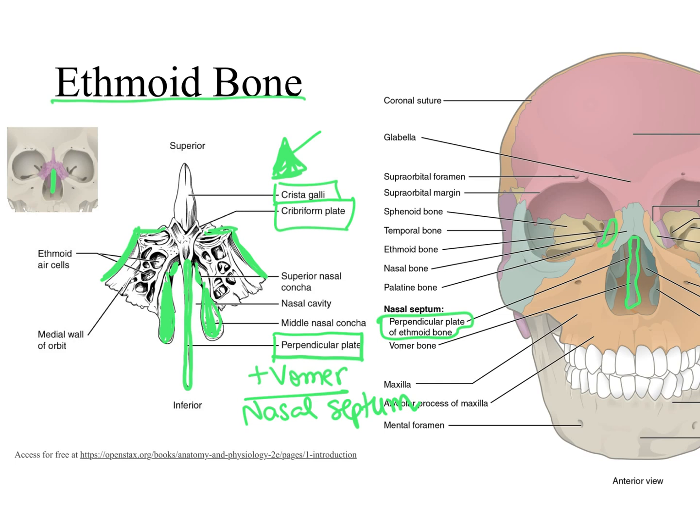The superior and middle nasal conchae serve as speed bumps that move the air we are inhaling within the nasal cavity. This is very helpful to warm, humidify, and clean the air before it goes down our respiratory tract. So the superior nasal concha and the middle nasal concha are bone features of the ethmoid bone.